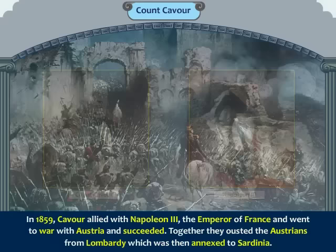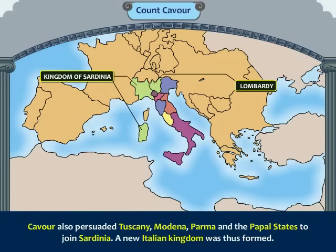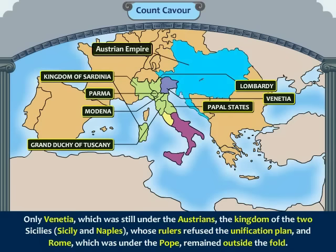In 1859, Cavour allied with Napoleon III, the Emperor of France, and went to war with Austria and succeeded. Together, they ousted the Austrians from Lombardy, which was then annexed to Sardinia. Cavour also persuaded Tuscany, Modena, Parma and the Papal States to join Sardinia. A new Italian kingdom was thus formed.